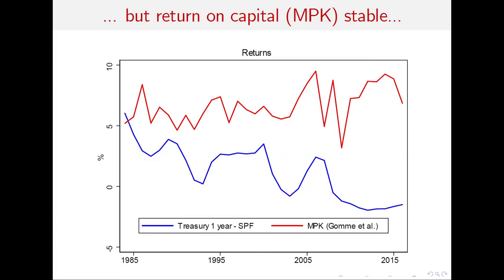One prominent explanation is an increase in the worldwide supply of savings, perhaps driven by demographics or by excess savings in emerging markets. But what's surprising is that not all rates of return seem to have declined in parallel. If you try to estimate the return to private capital in the economy, you find something that's more or less stable.